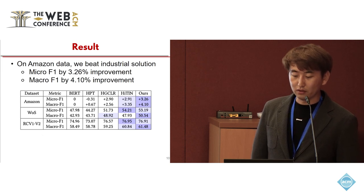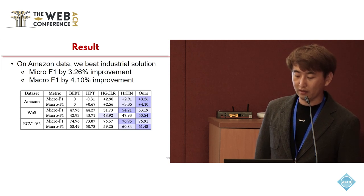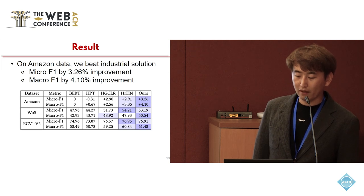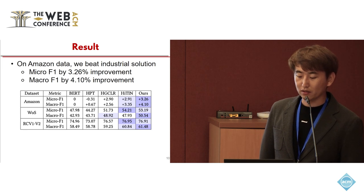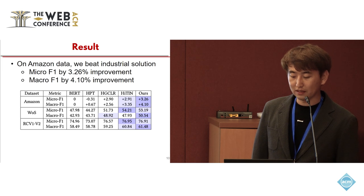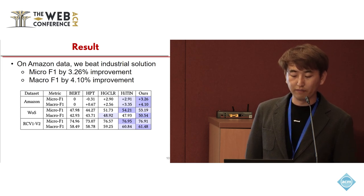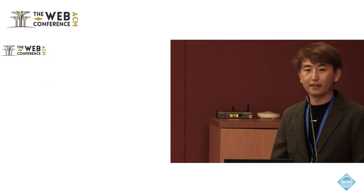On Amazon data, this approach beats the industry solution with a 3.26 percentage improvement in micro F1 and a 4.1 improvement in macro F1. Besides Amazon internal data, they also used two other datasets, WOS and RCV1-v2, and all got very good improvement. That's all, thank you.